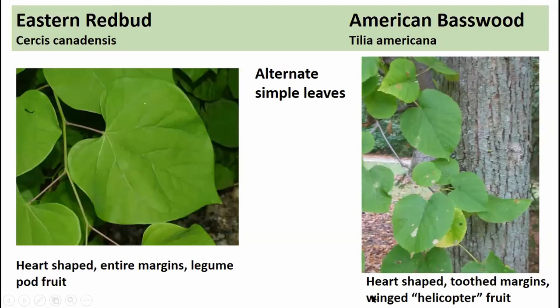Oaks have alternate simple leaves, as do a few other examples. Eastern redbud, Cercis canadensis, is a small tree with nice heart-shaped leaves alternately arranged — the leaves have entire margins and zigzag back and forth on the stem. It's in the legume family and has what looks like little bean pods for seeds. American basswood also has heart-shaped leaves but with toothed margins — a good separating characteristic — and gets to be a large tree with long running ridges of bark and a distinctive helicopter-like winged fruit.